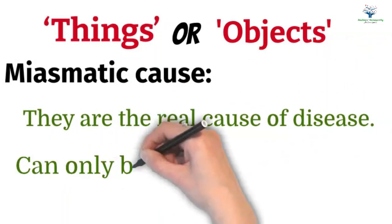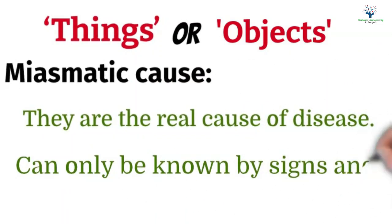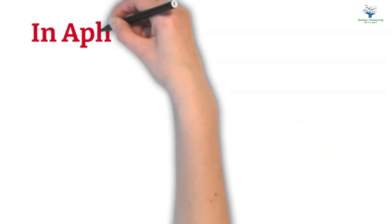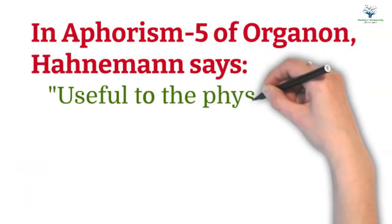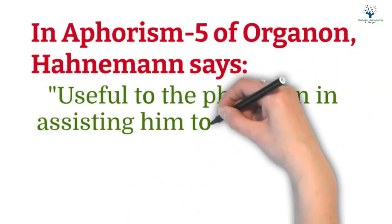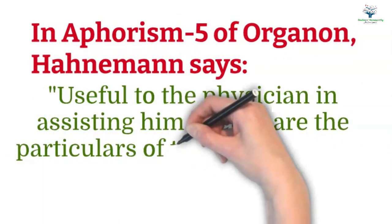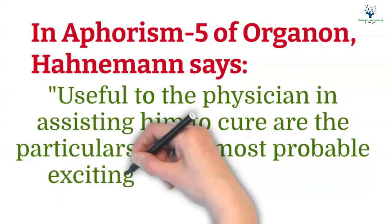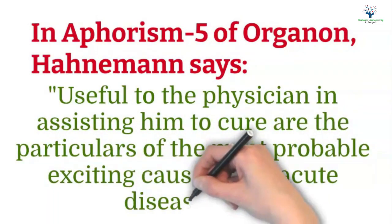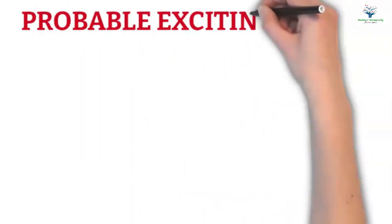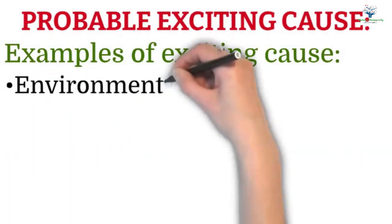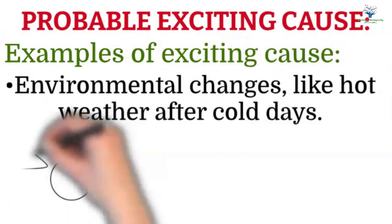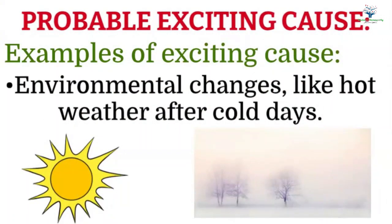Coming next in Aphorism 5 of Organon of Medicine, Hahnemann says useful to the physician in assisting him to cure are the particulars of the most probable exciting cause of the acute disease, etc. Now what is the probable exciting cause? Let's understand from the examples.